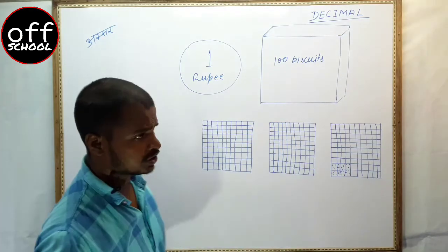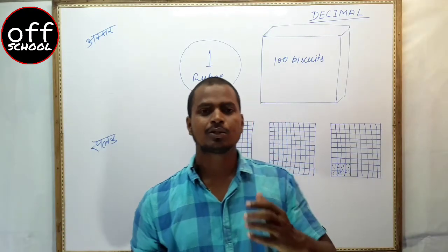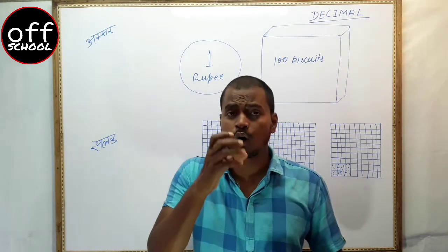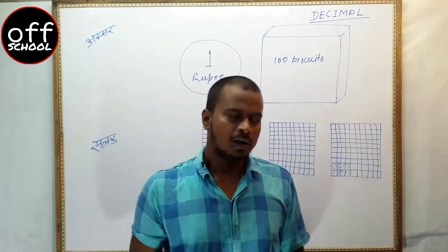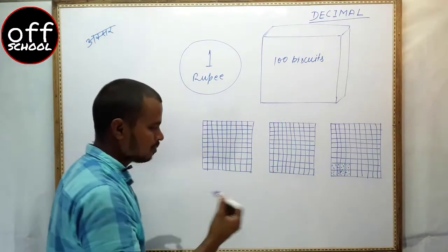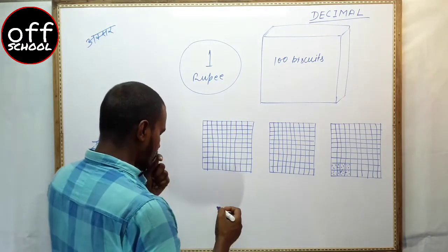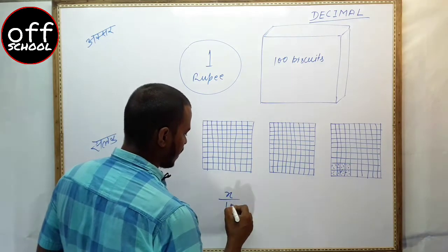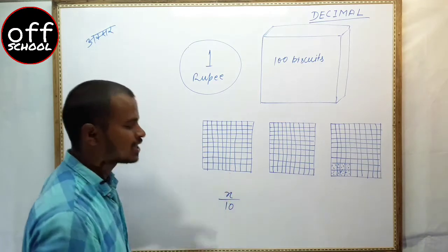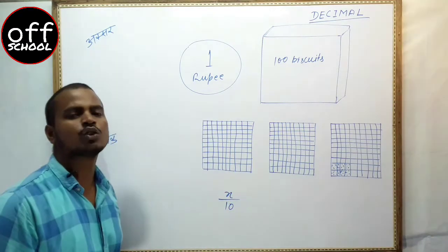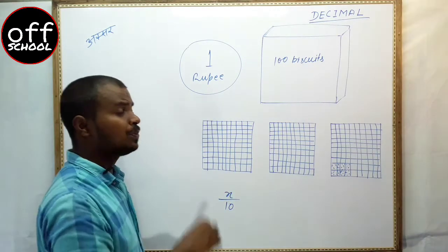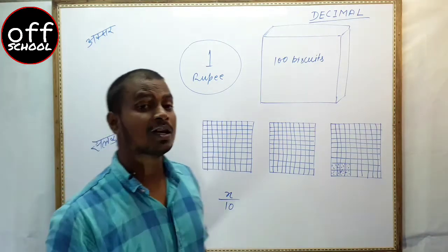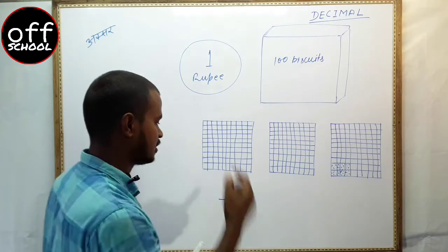In decimal it is somewhat similar to fraction form, but in decimal the denominator is always taken in the form of powers of 10. For example, if there is one object x and you divide it into 10 parts, then this type of fraction is called a decimal fraction, and then it is written in another form called the decimal form.